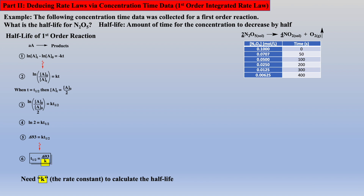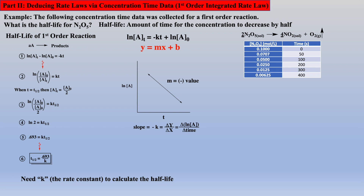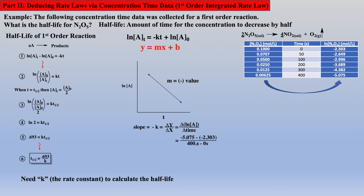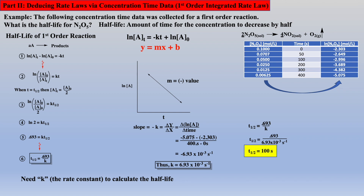Again, in the wording of this problem, we are told the reaction is first order. Thus, we can obtain the slope by plotting natural log of A versus time and examine the first and last data points to calculate the rate constant, which we have already demonstrated in the previous example problem. Starting with the first order half-life equation and substituting in the rate constant, we obtain the half-life for this reaction, which means that every 100 seconds, half of the reactant will be gone.